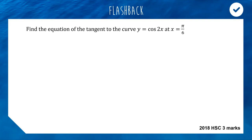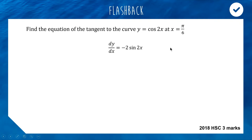If we're finding the equation of a tangent, the first thing we need to do is differentiate our function. We'll take the derivative of cos(2x): cosine differentiates to negative sine(2x), and then we multiply by 2 because that's the derivative of the function inside. Now we substitute in our value of x equals π/6.